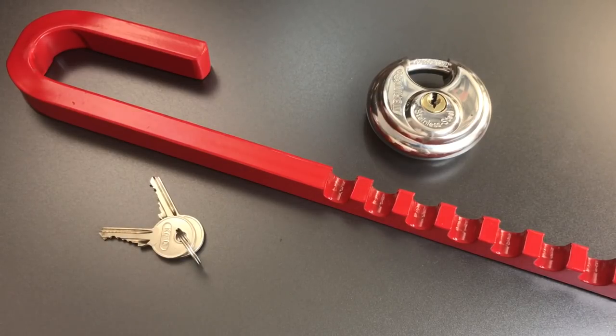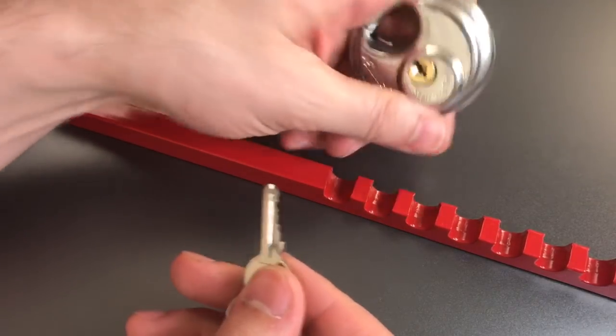The overwhelming majority of disc padlocks out on the market are 70 millimeters. You'll see a few 80s and a few 90s but this is the first and only 60 millimeter lock that I've come across.